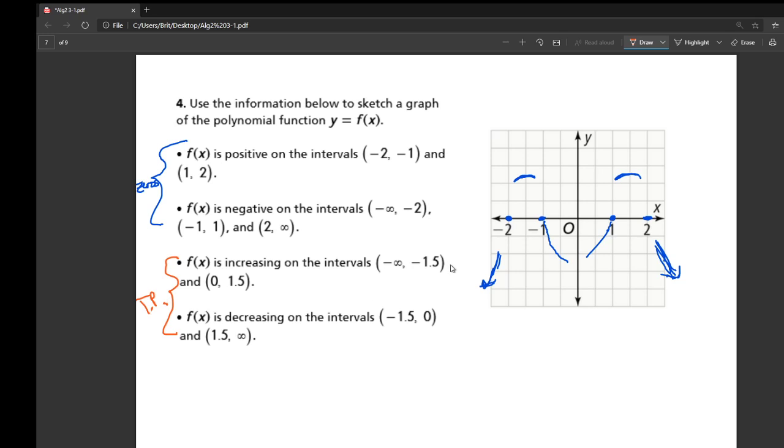So we know that the graph is increasing from negative infinity to negative 1.5. So here is our first turning point. Very often, the turning point is halfway between the zeros. Not every single time, but it's usually a good assumption to make.